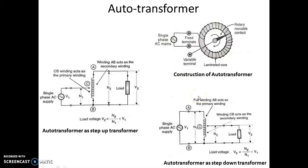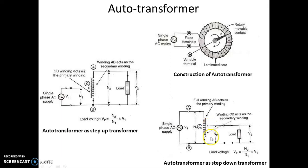Now let us see how this auto transformer can be used as a step-down transformer. The two fixed terminals A and B are connected to the AC power supply, so AB acts as the primary winding. The full winding AB acts as the primary winding, and there is a movable contact C, so the secondary winding is between C and B. Because the number of turns of the secondary winding CB is less than the number of turns of the primary winding AB.